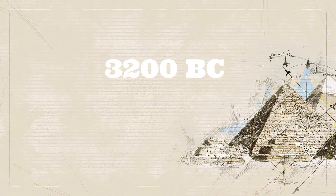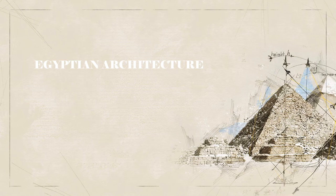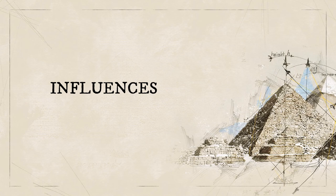Let's go back to the year 3200 BC to the 1st century AD and witness Egyptian architecture, its influences, and architectural character. First up are the influences.